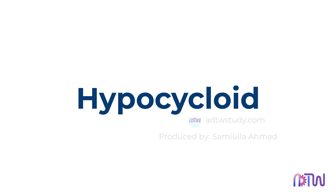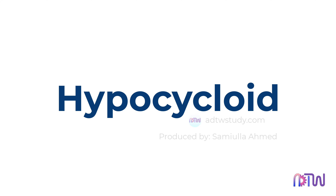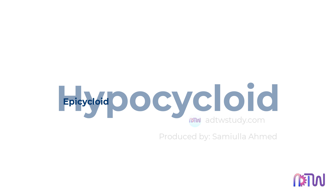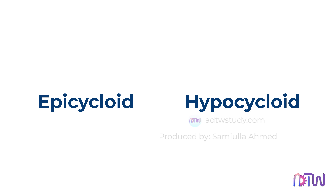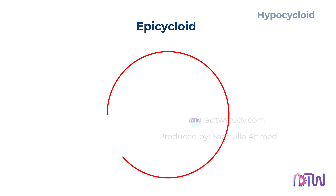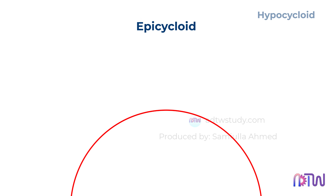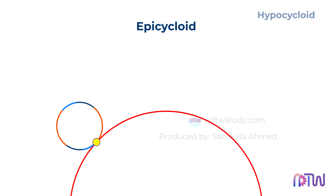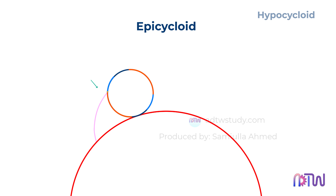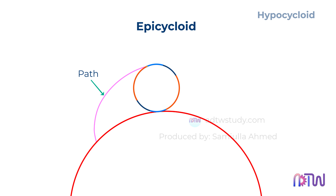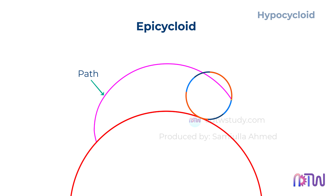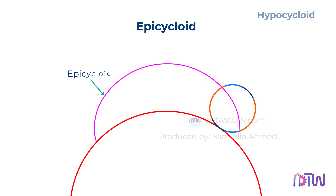Hello, everyone. In this video, we will learn how to draw a hypocycloid. Let's understand what epicycloid and hypocycloid exactly mean. Consider this circle or a circular path. If a circle rolls along this circular path such that it completes one revolution, the path traced by a point on the circumference of the rolling circle is called the epicycloid.